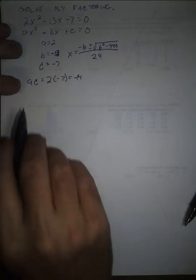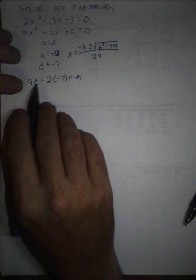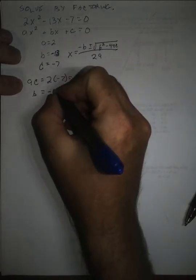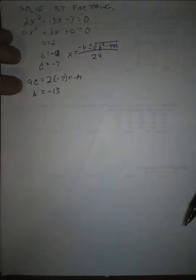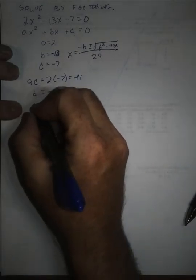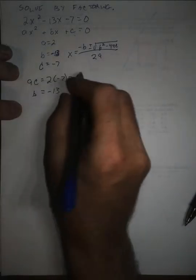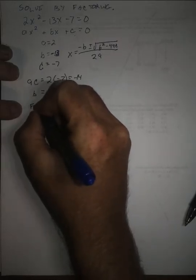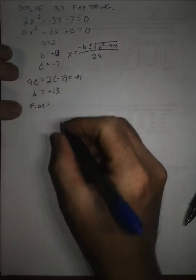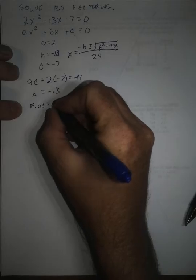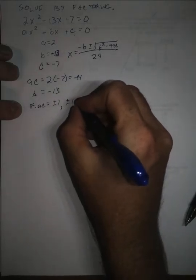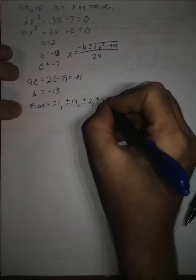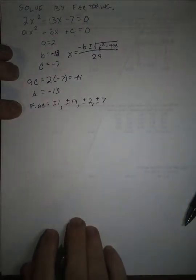We're looking for factors of negative 14 that add up to b, which is negative 13. And this one's fairly straightforward. I want factors of negative 14. Let me list them. I'm going to do factors of ac. Those are plus or minus 1, plus or minus 14, plus or minus 2, and plus or minus 7.